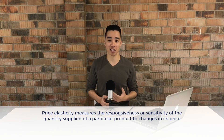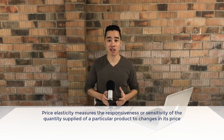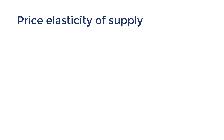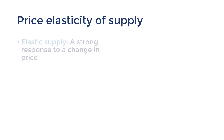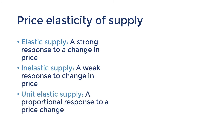The word elasticity is synonymous with the word sensitivity. So price elasticity of supply measures the sensitivity that supply is to a price change. When quantity supplied has a strong reaction to a price change we call that price elastic supply. When quantity supplied has a weak reaction to a price change we call that price inelastic supply. A proportional reaction is called unit elastic.